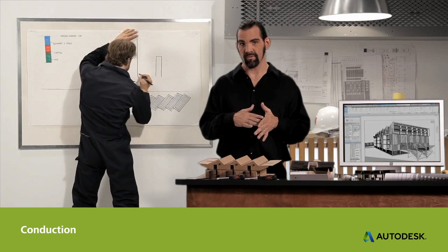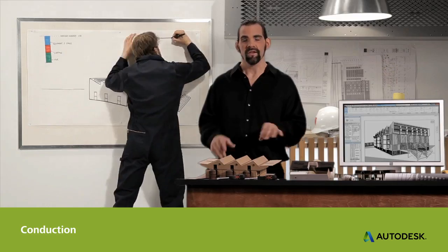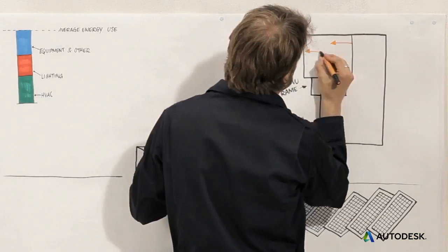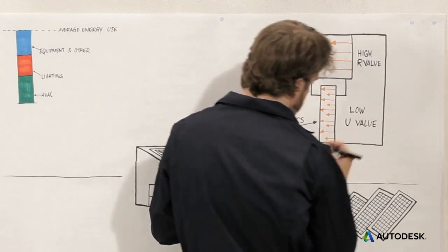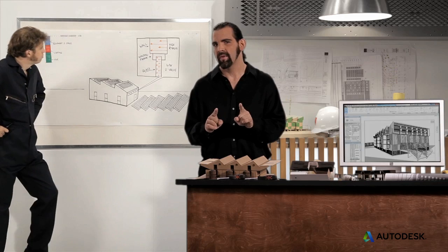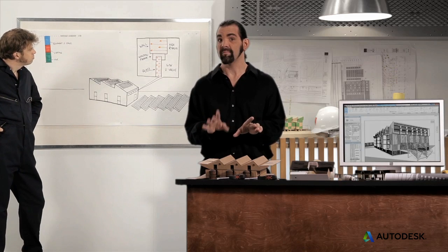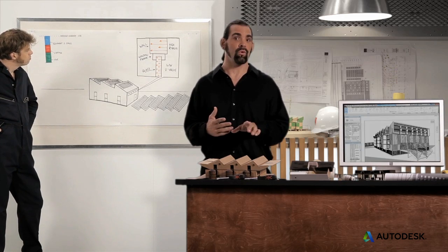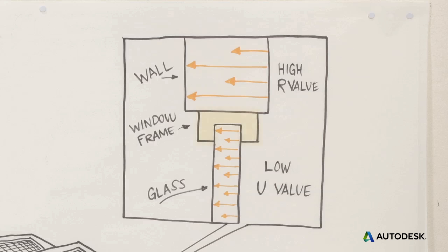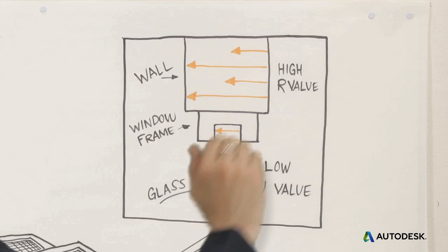When heat passes through your building materials, that's conduction. You can reduce it by using insulation with high R values and windows with low U values, but watch out. Even a well-insulated building can be undone by steel beams or bad window frames that create a thermal bridge across your insulation to leak heat outside.